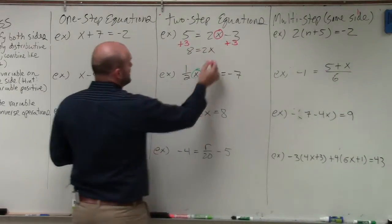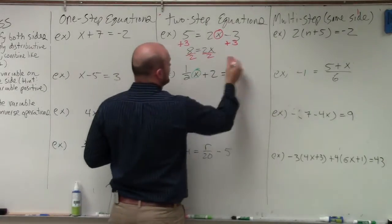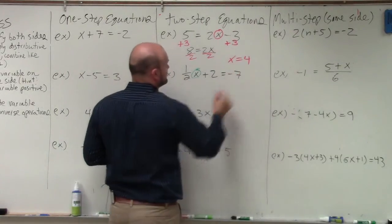Now you can see my variable is being multiplied by two. So to undo multiplication by two, I divide by two. And I get a final answer of x equals four.